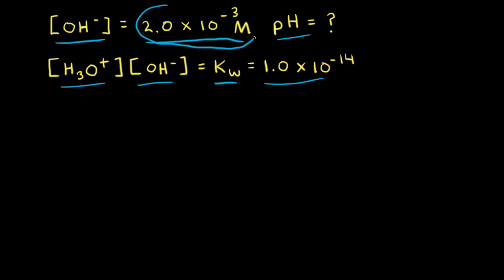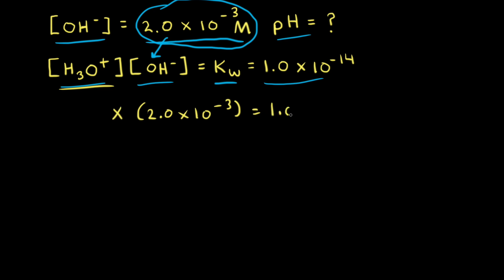We can plug in the concentration of hydroxide ions into the Kw equation: 2.0 times 10 to the negative third. We don't know what the concentration of hydronium ions is, so we'll call that X and solve for it. X equals 5.0 times 10 to the negative 12, and this is equal to the concentration of hydronium ions.